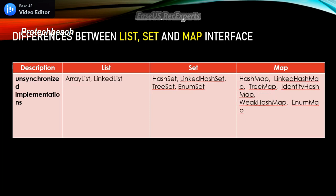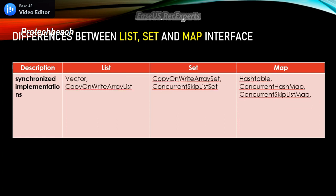If you want to know exactly what synchronized and unsynchronized means, I have already created a video on the difference between List and Set interface, where I clearly explained synchronized and unsynchronized — please go through that video. The last difference is synchronized implementations. For List, the synchronized implementation is the Vector class. For Set, we have CopyOnWriteArraySet and ConcurrentSkipListSet. For Map, HashTable is the synchronized implementation.